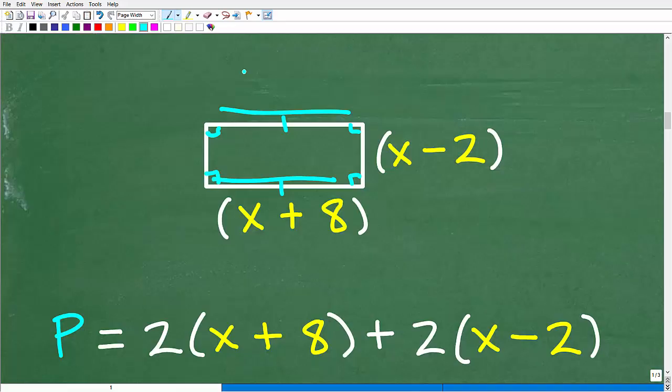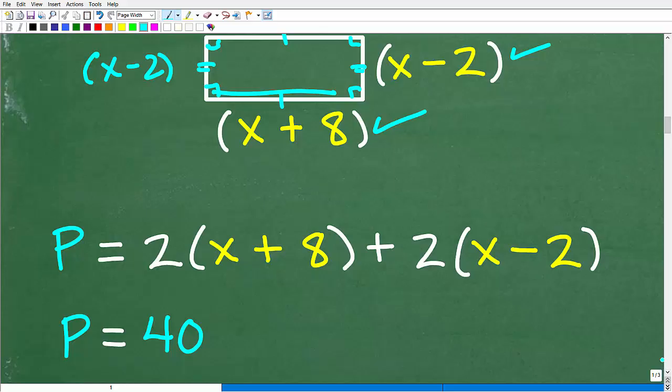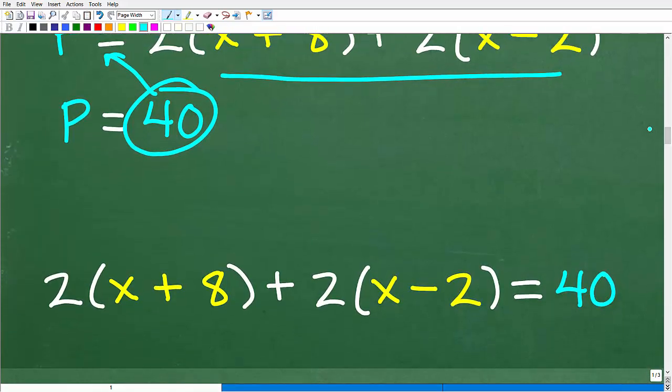Well, opposite sides are congruent. So in other words, this length is the same as this length. So over here, this is x plus 8. And then these sides over here are the same. So over here, this is x minus 2 as well. So we have two x minus 2s and two x plus 8s. If we add all these up, we get the perimeter. So we can write the perimeter this way. So the perimeter is equal to 2 times x plus 8 plus 2 times x minus 2. Now, of course, we're told that the perimeter is equal to 40 meters. So what we want to do is set this expression right here equal to 40.